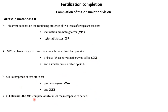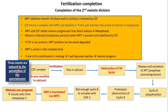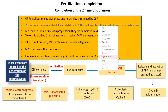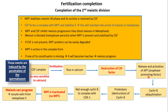In order for metaphase 2 to persist, the MPF complex must be present and stabilized by the CSF. When fertilization occurs and the spermatozoon penetrates the oocyte, we will have an increase in calcium levels. This increase in calcium levels will lead to the destruction of the CSF factor and the release and activation of the anaphase promoting factor (APF).